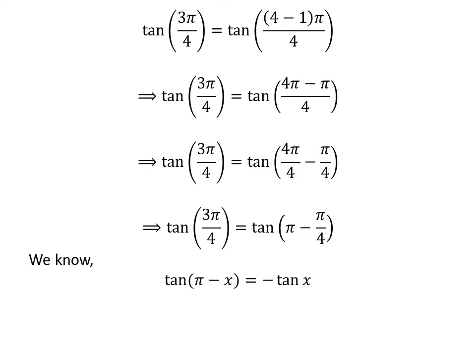We know the famous trigonometry identity: tangent of (pi minus x) is equal to minus tangent of x. The proof of this identity has been explained in the video appearing in the upper right corner, and the link is also given in the description section. Applying this identity gives us tangent of 3π/4 is equal to minus tangent of π/4.